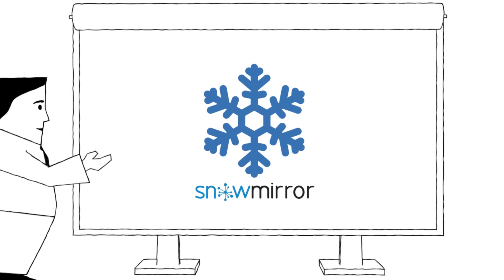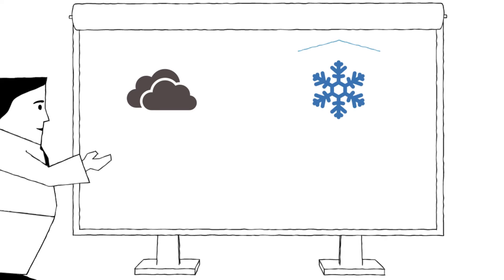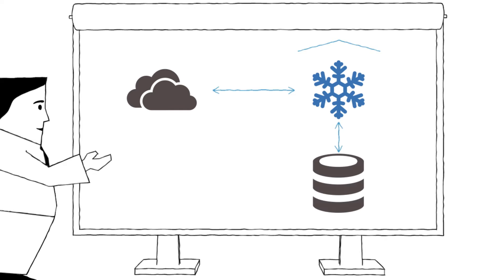Snowmirror is a smart data replication tool for ServiceNow. It replicates the data from ServiceNow to your traditional database, such as Oracle or Microsoft SQL Server. All of the selected tables are synchronized into a database running in your environment. Then you have the data inside your organization, and you can easily connect all of your favorite applications to the database. It's that simple.